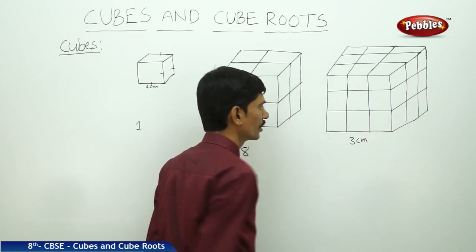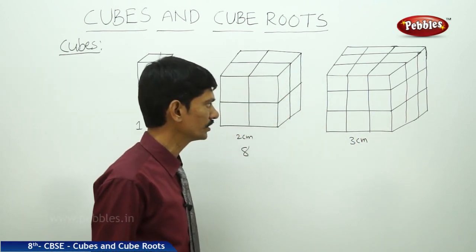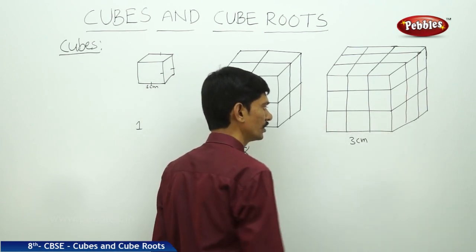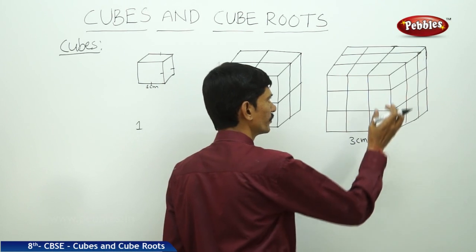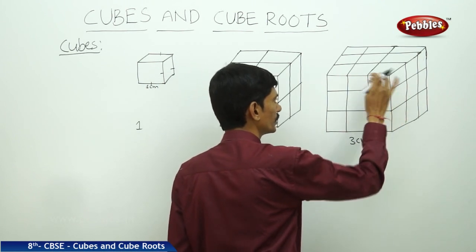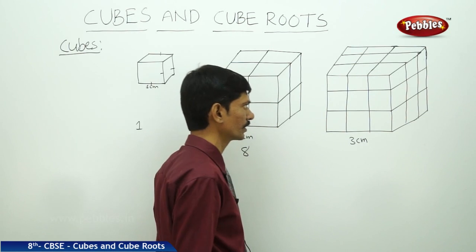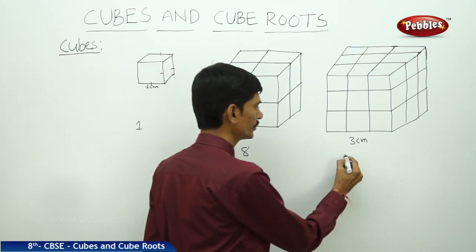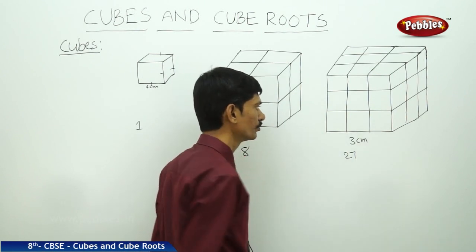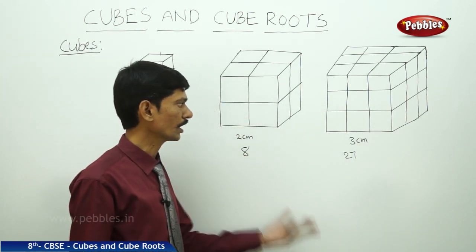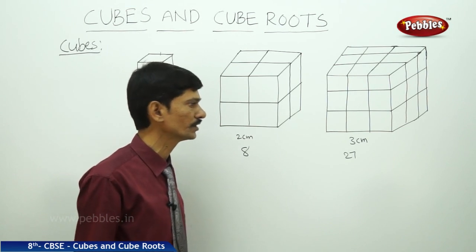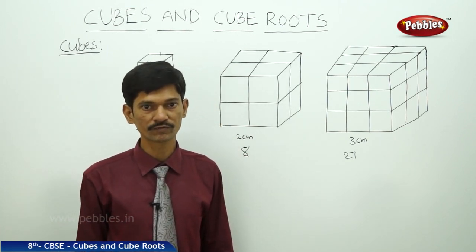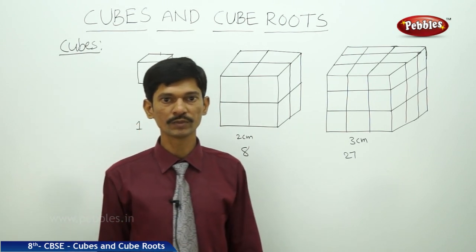In the third figure, the side of the cube is three centimeters. Along length, breadth, and height there are three cubes each, giving a total of twenty-seven unit cubes whose side is one centimeter. If you take a cube of side four centimeters, then there will be four times four times four, which is sixty-four unit cubes.